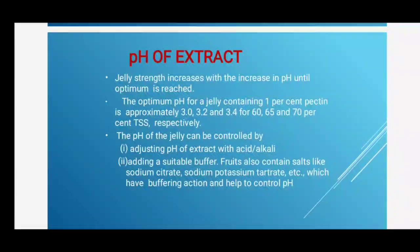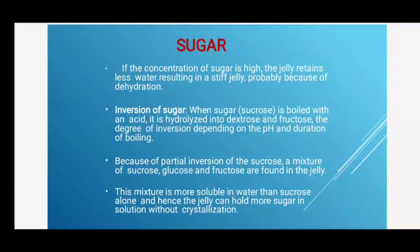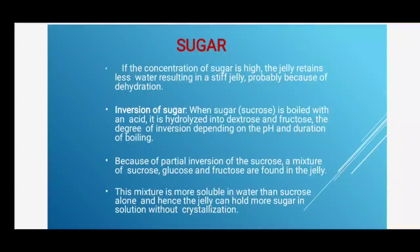Sugar is an essential constituent of jelly, imparting sweetness as well as body. If sugar concentration is high, jelly retains less water, resulting in a stiff jelly, due to dehydration. When sucrose is boiled with an acid it is hydrolyzed into dextrose and fructose — the degree of inversion depends on pH and duration of boiling. Because of partial inversion, a mixture of sucrose, glucose, and fructose is found in jelly, which is more soluble in water than sucrose alone, allowing the jelly to hold more sugar without crystallization.